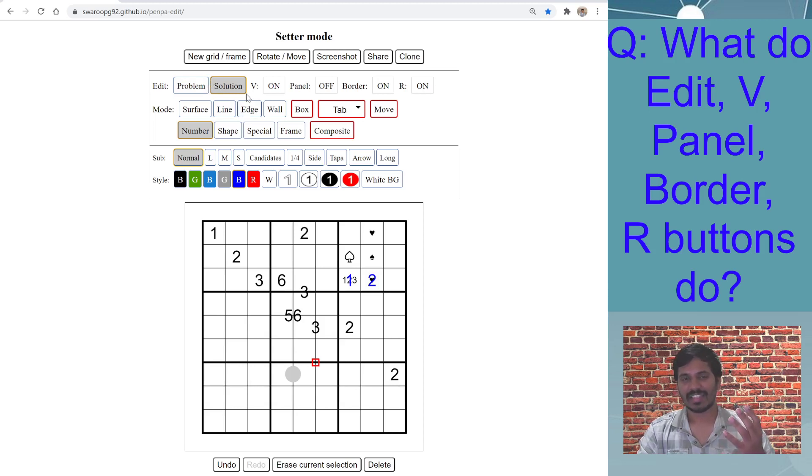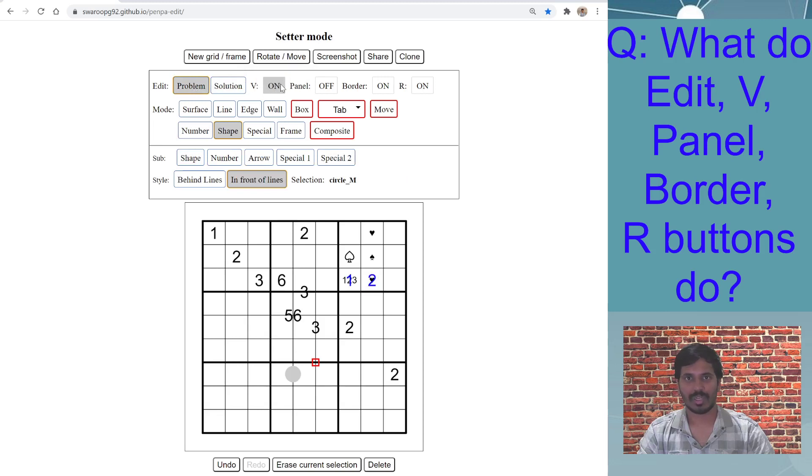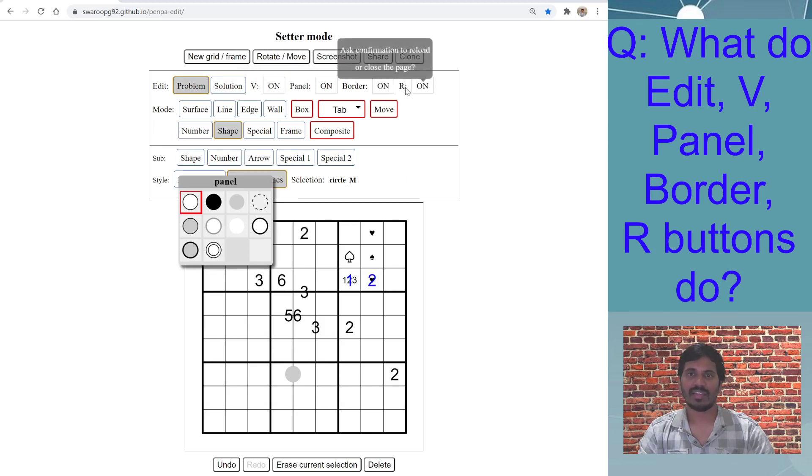And I'll show you how to use the Solution mode for answer check. Then I talked about the V mode—visibility to switch on and off in the Problem mode to show solution or not—the Panel mode, the Border on/off, and then the reload option. I know you might be feeling that this is so many things to grasp, but believe me, these are kind of intuitive if you use it once.